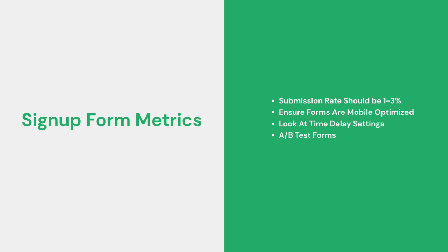Some aspects to consider for improvement include the following: make sure your form is optimized for mobile — maybe have a separate form for mobile altogether. Keep in mind that users will have to type on their phones and have a fundamentally different experience. Also, take a look at your time delay settings. Perhaps you're showing the form too soon and being a nuisance, or perhaps not soon enough and users don't even have the opportunity to sign up. Maybe you need a separate form specifically geared toward exit intent. All things are worth considering in testing, so always A-B test when looking to find more opportunities for improvement.